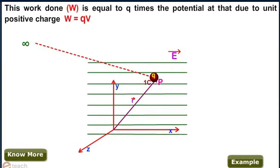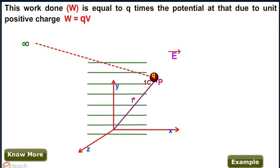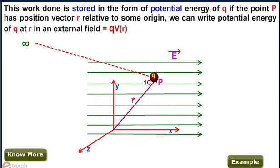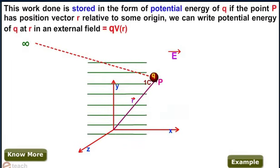This work done W is equal to Q times the potential at that point due to unit positive charge. Therefore, work done can be written as Q into V. This work done is stored in the form of potential energy of Q.